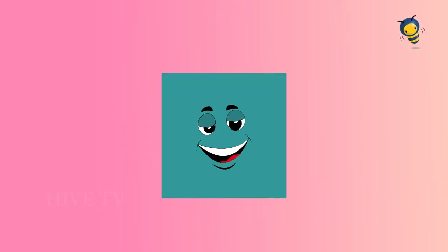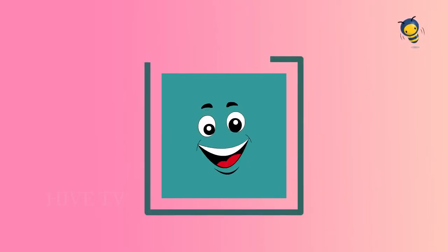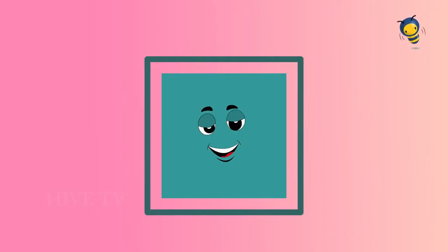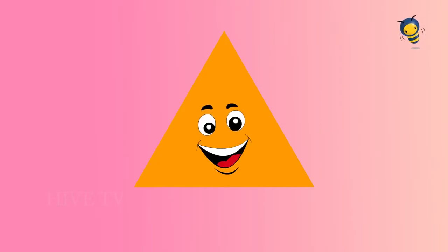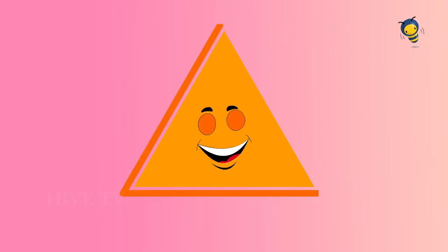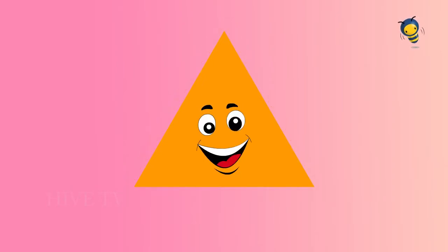Squares have four corners, squares have four sides, all corners are the same, all sides are the same. Triangles have three corners and three sides, sides and corners can be any size.